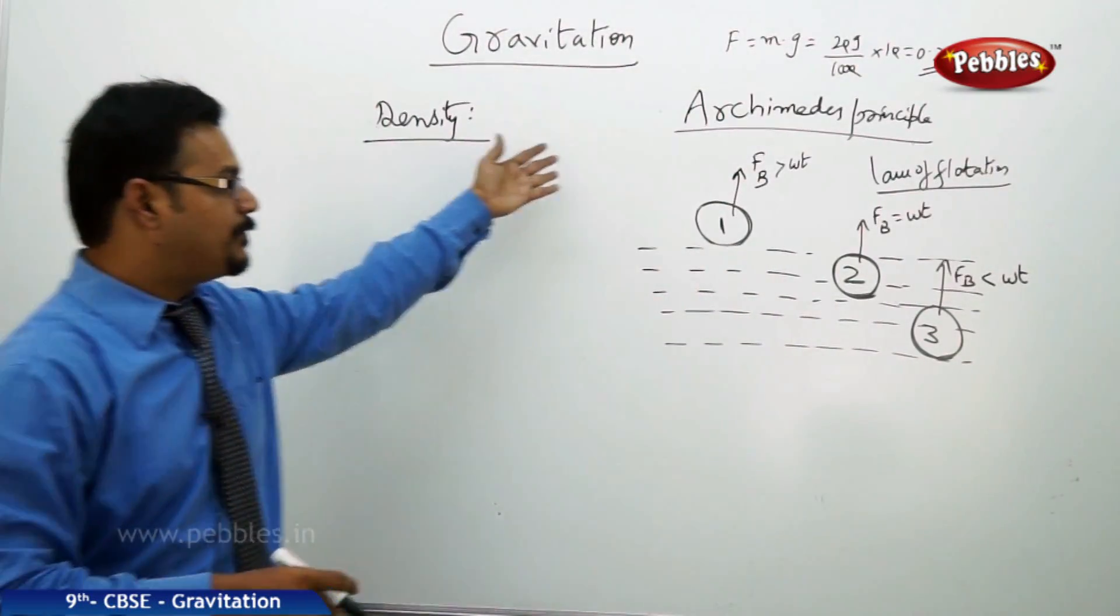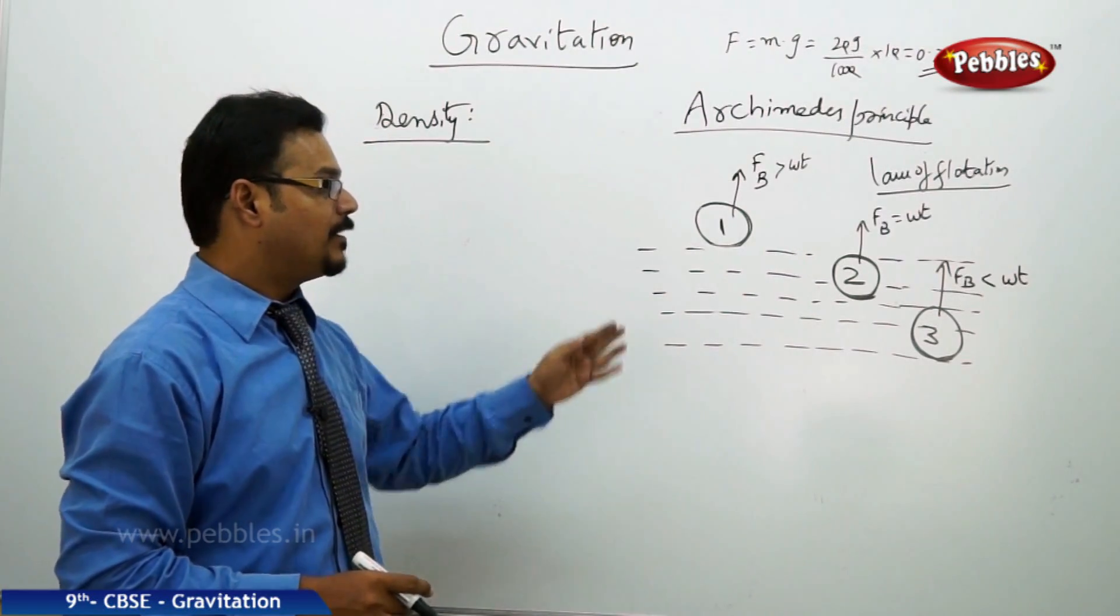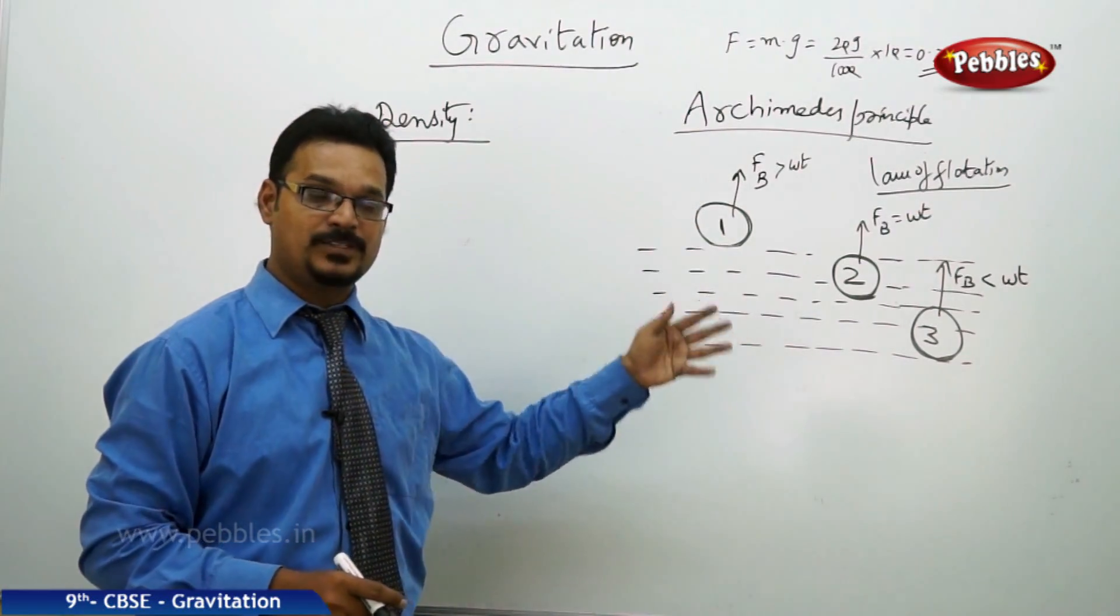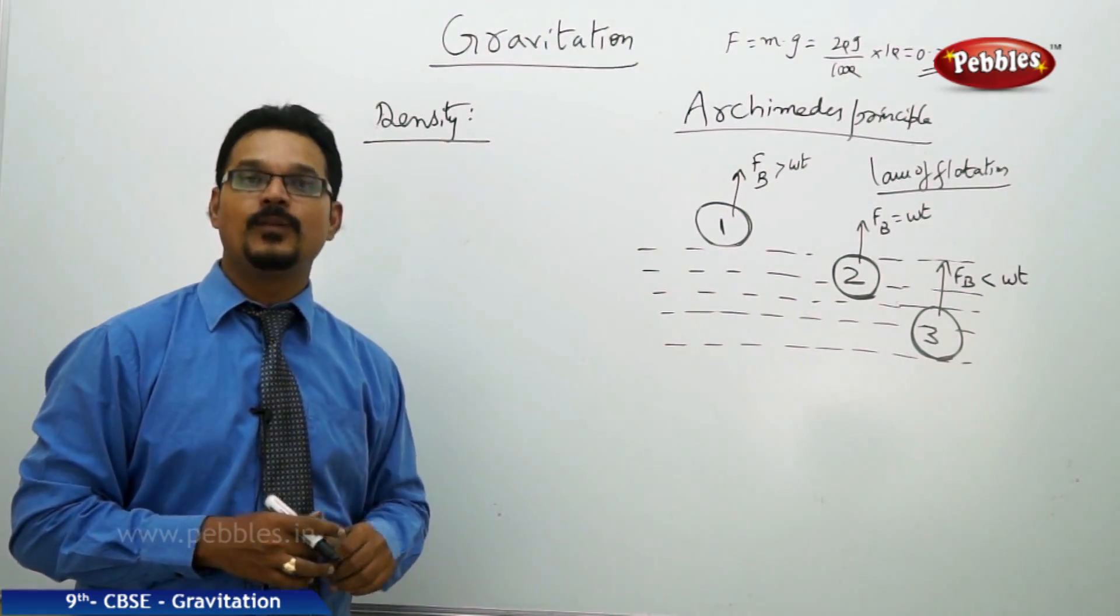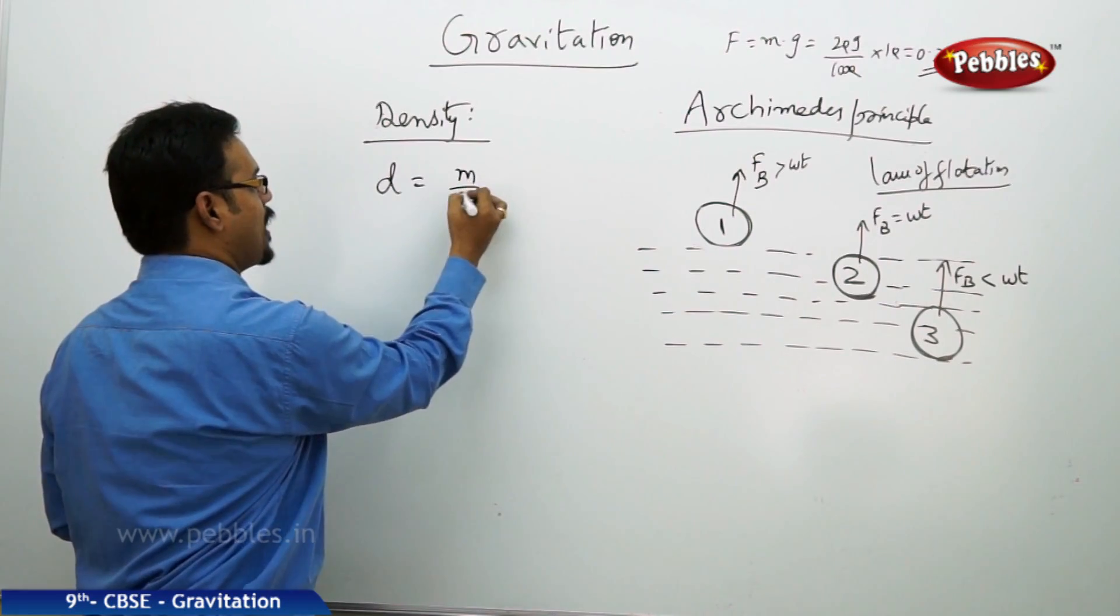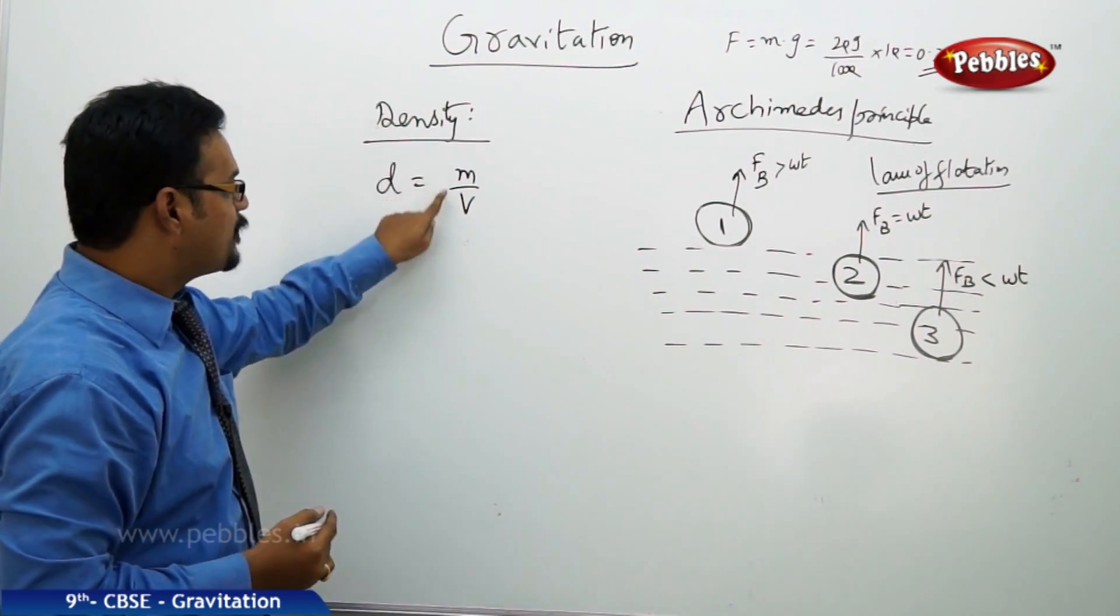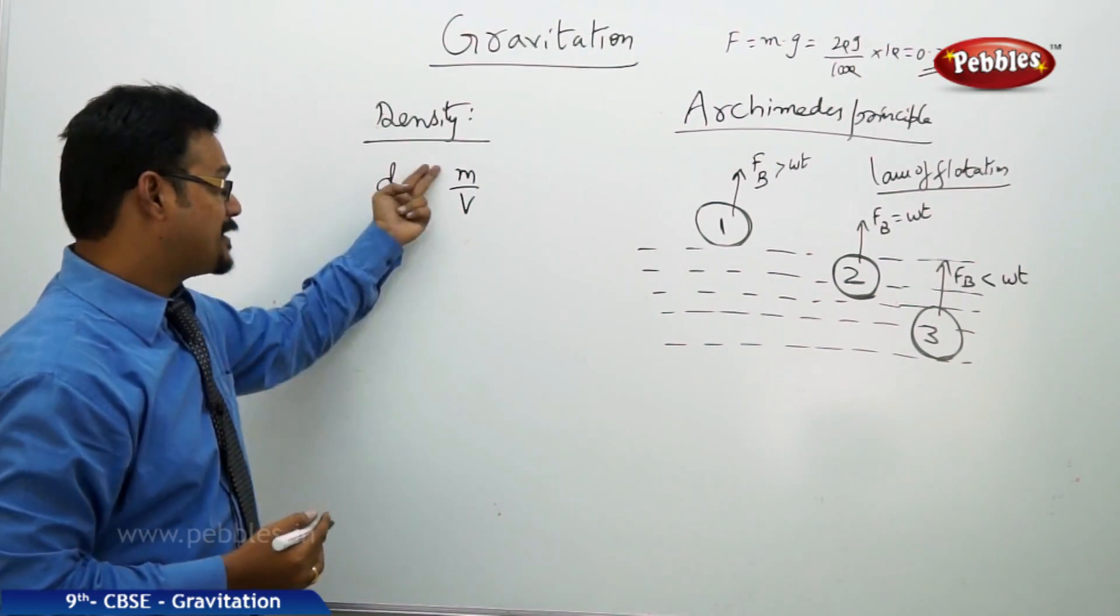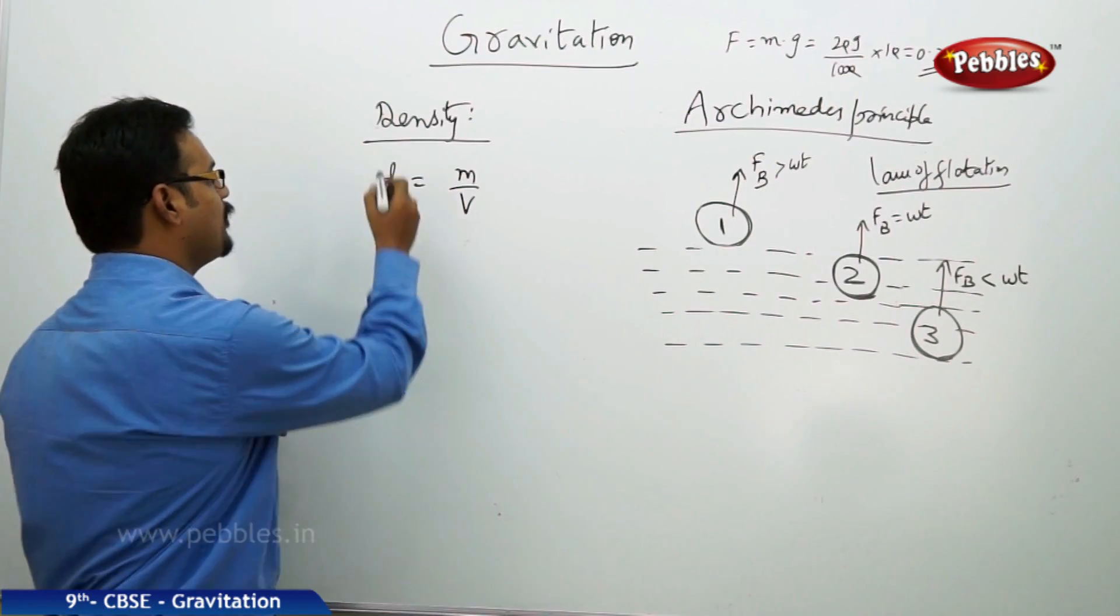Now the same three balls we are taking, this time we'll tell why the balls are like this based on the property called density. What is density? Density is defined as the ratio of mass to volume, or mass per unit volume, or mass divided by volume. We can say ρ = m/V.